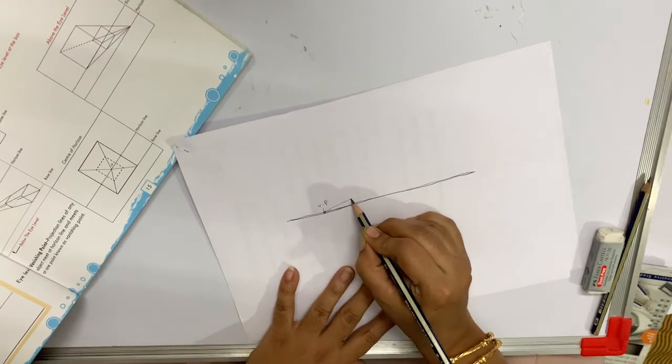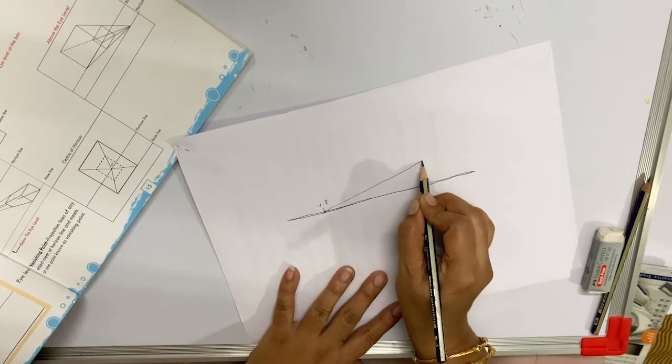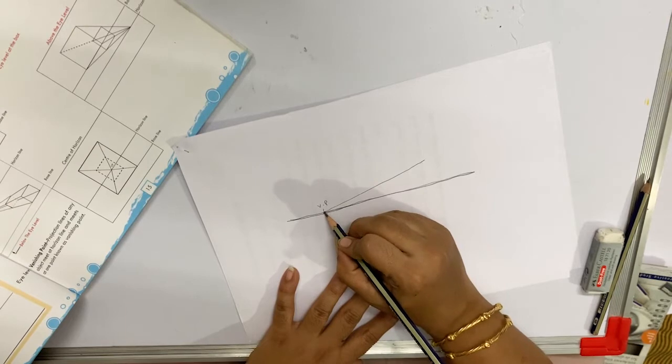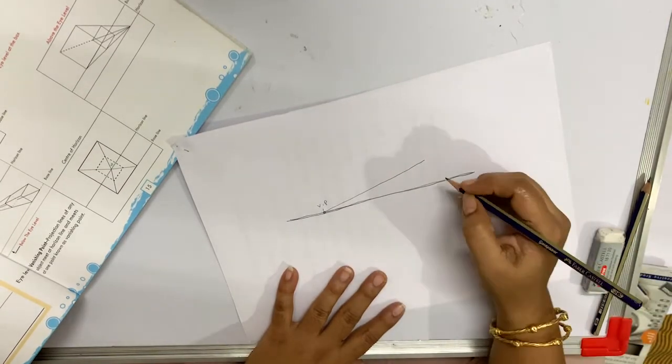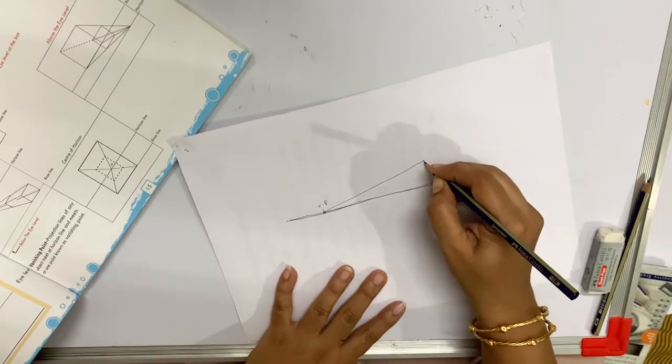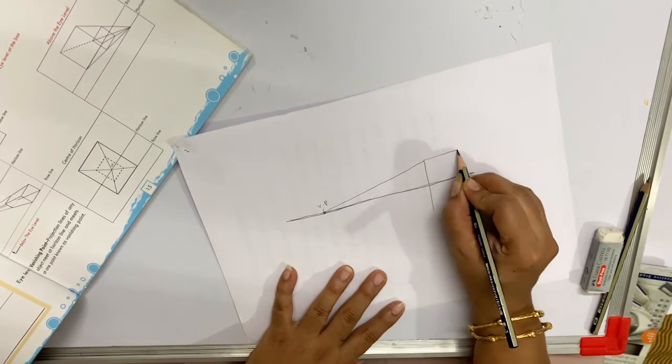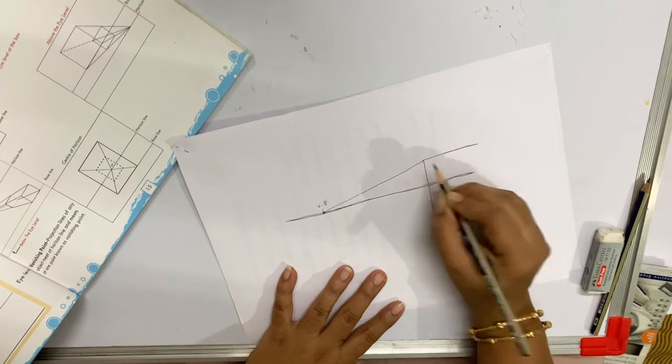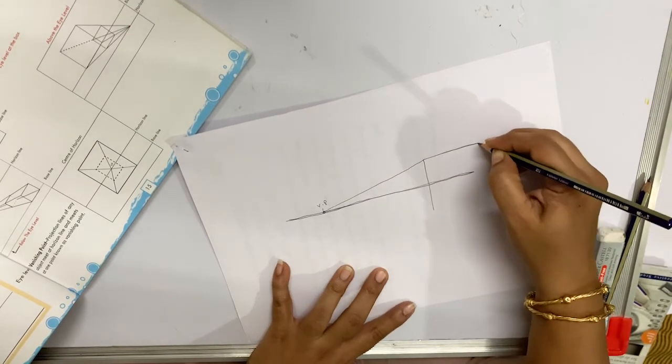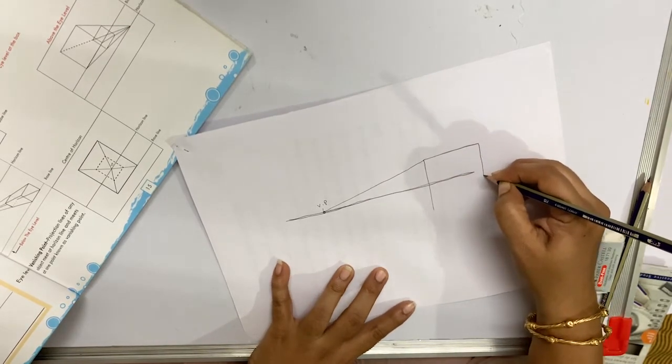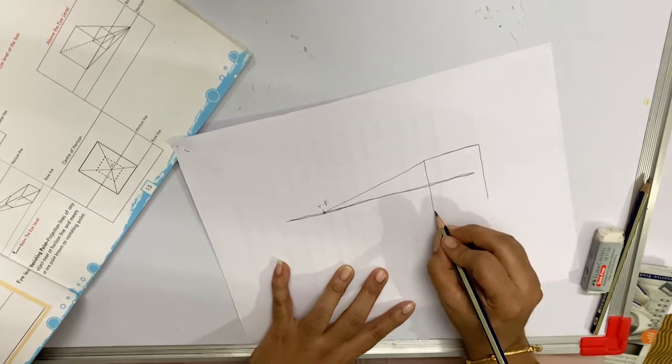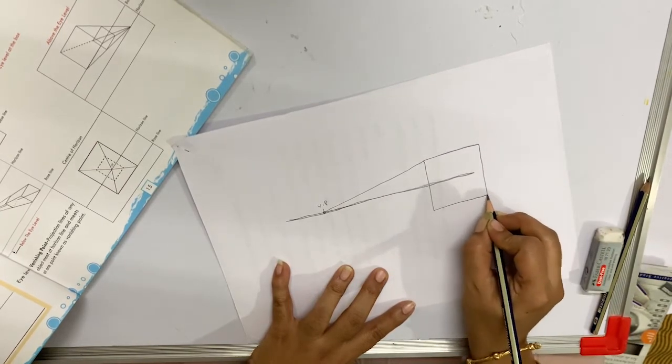We will draw different perspective lines over here. Basically, this technique is used to give a 3D object on a 2D paper sheet. See, I am drawing a square over here like this.